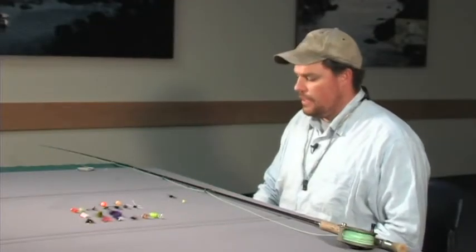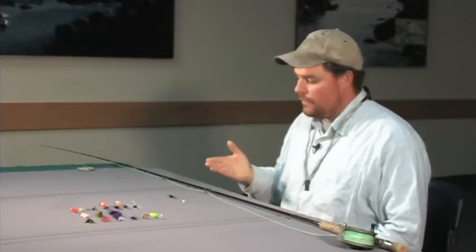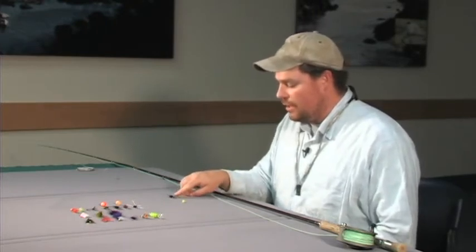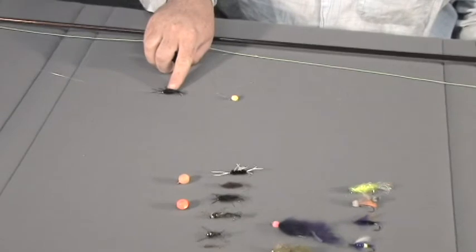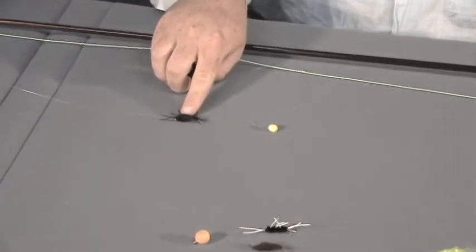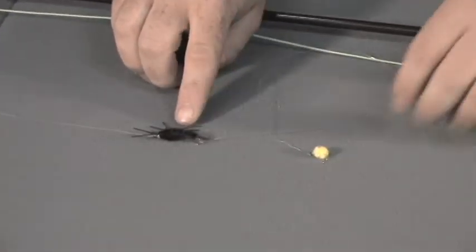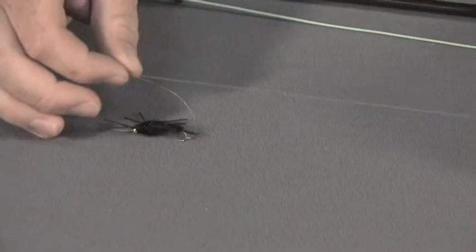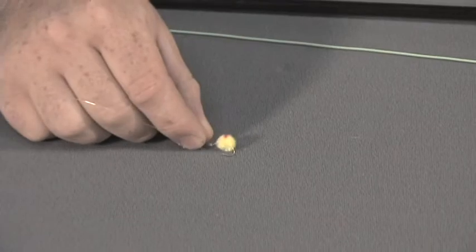To get started fly fishing, nymphing is a good way to start. I usually use a large buggy fly such as this big stonefly nymph as my primary nymph. With a small section of leader material, I attach a dropper fly. In this case, we've got a little leg pattern.